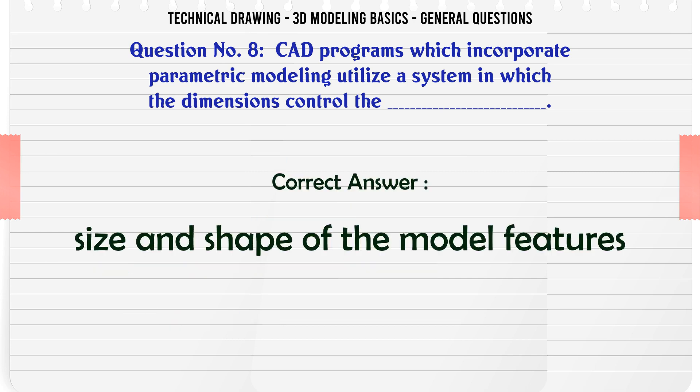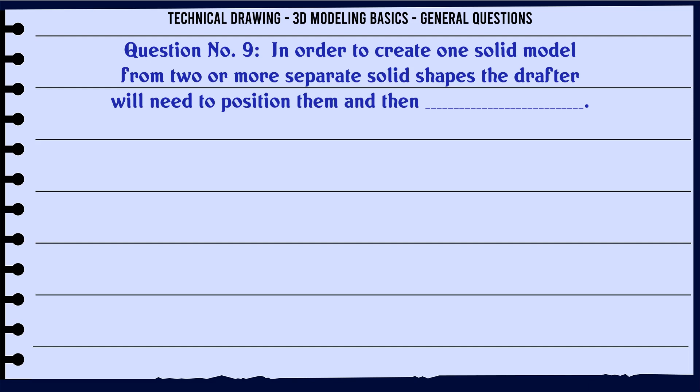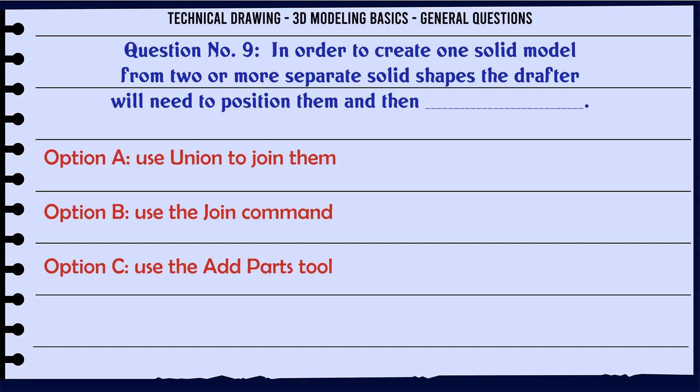The correct answer is A. Size and shape of the model features. B. Perspective of the model. Model from two or more separate solid shapes the drafter will need to position them and then.